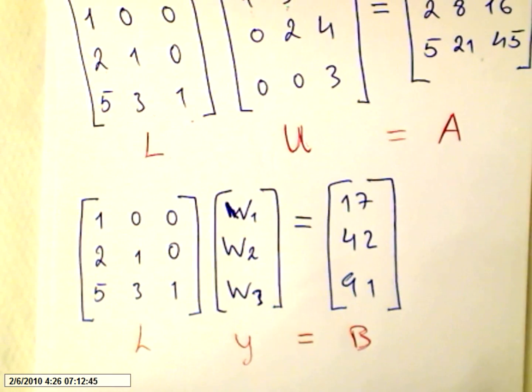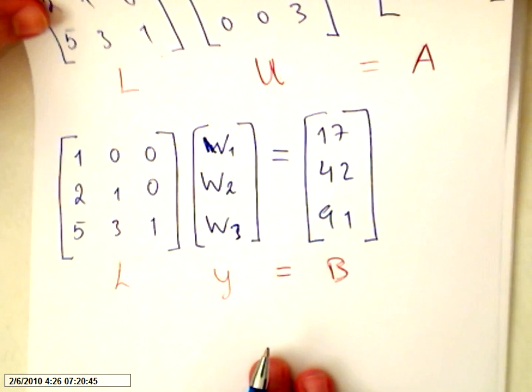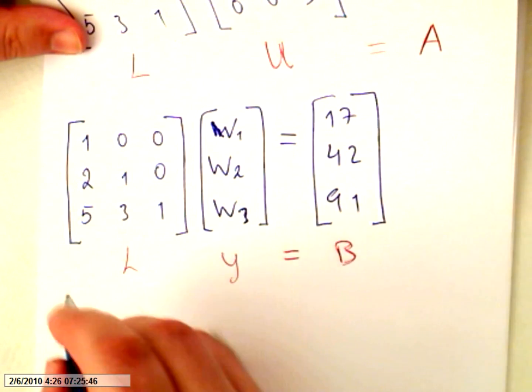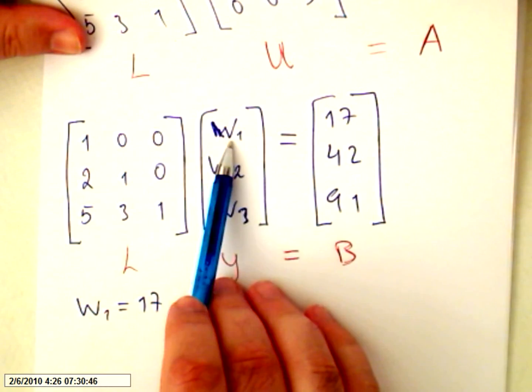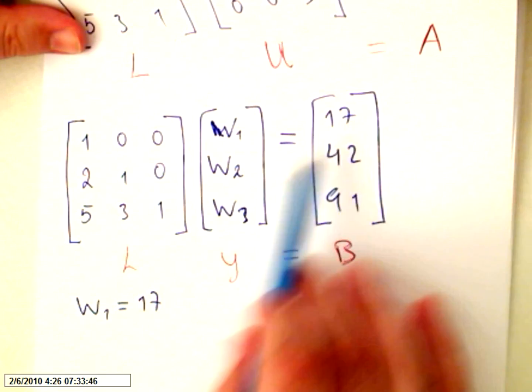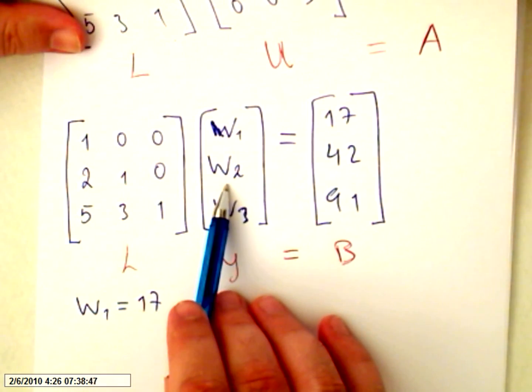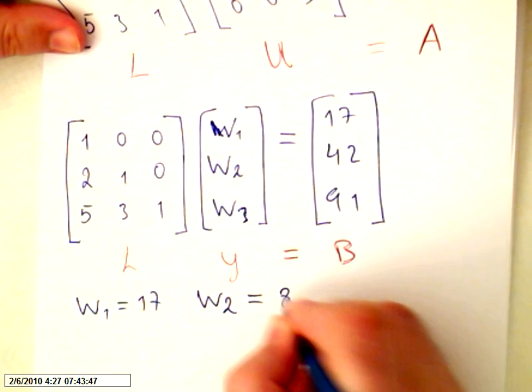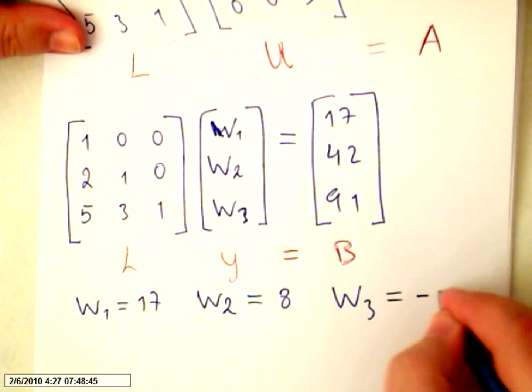I am not going to do this because I am sure if you are watching these videos you are quite familiar with all this. So the results are not very difficult. 1 times w1 equals 17. 2 times w1 plus, now you know w1 is 17, so it's 2 times 17 plus y2, so y2 will equal 8.